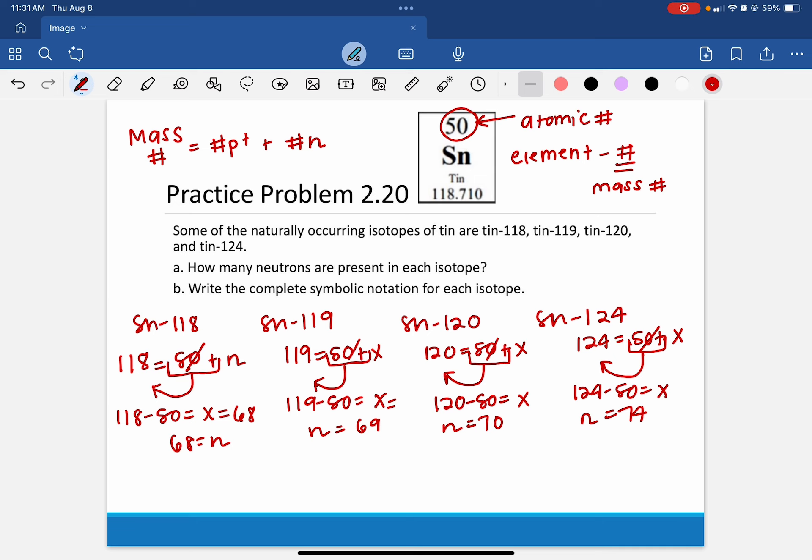And letter B asks us to write symbolic notation for each. So all of their symbols are going to be Sn because they are all versions of tin. They are all going to have 50 protons. The atomic number is the same for every single one of them. And only the mass number changes. So 118, 119, 120, and 124. And that's it for symbolic notation.